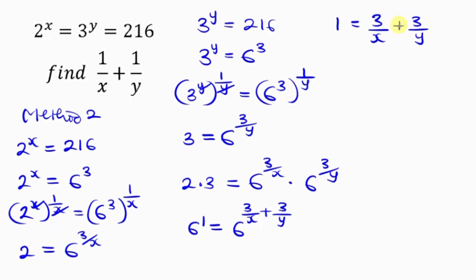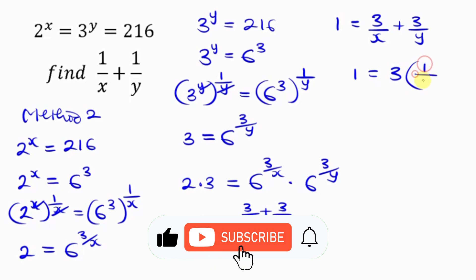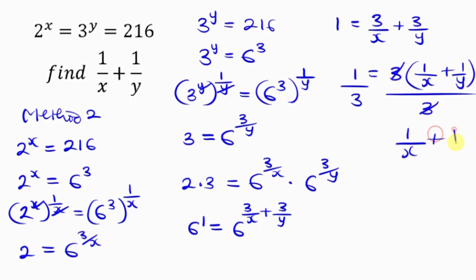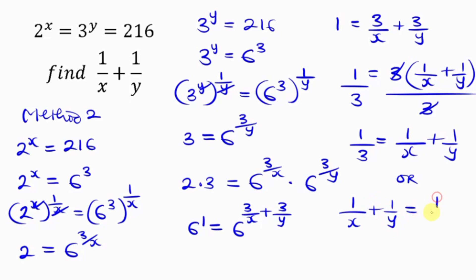Since the base is the same, we equate the powers. The left side has power 1, so 1 equals 3 over x plus 3 over y. Factoring out 3 gives 1 equals 3 times (1 over x plus 1 over y). Dividing both sides by 3, we get 1 over x plus 1 over y equals 1 over 3. And there you have it.